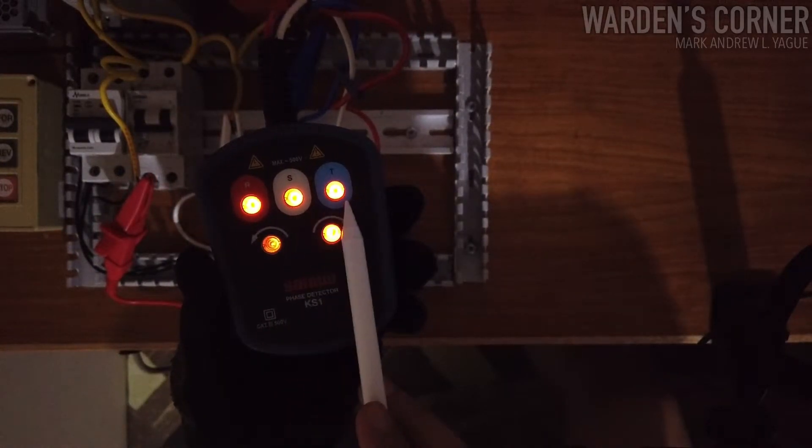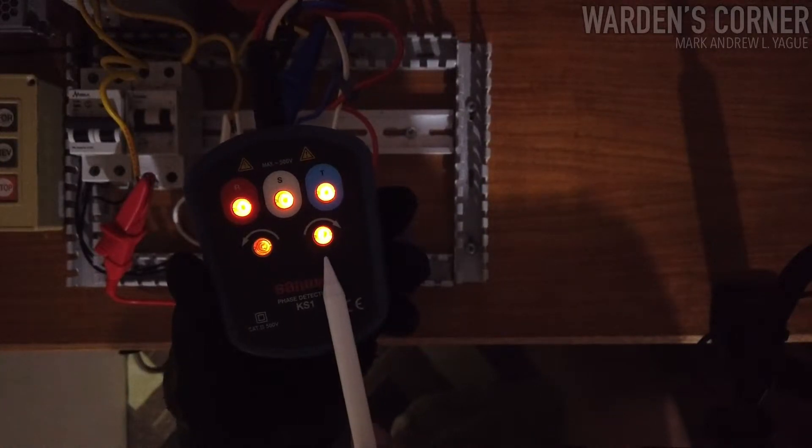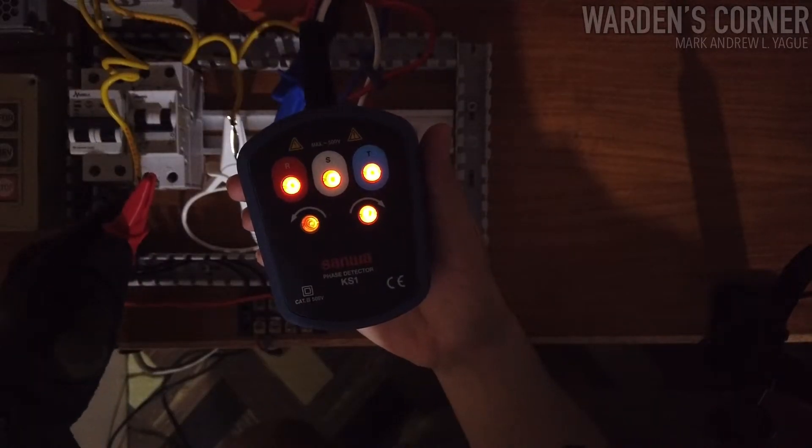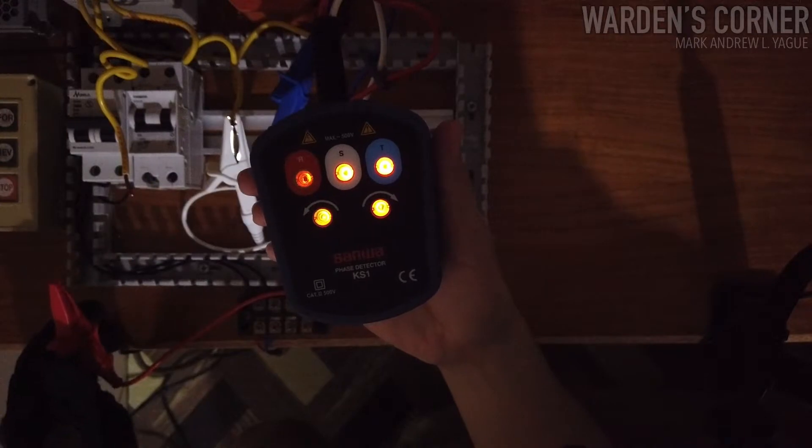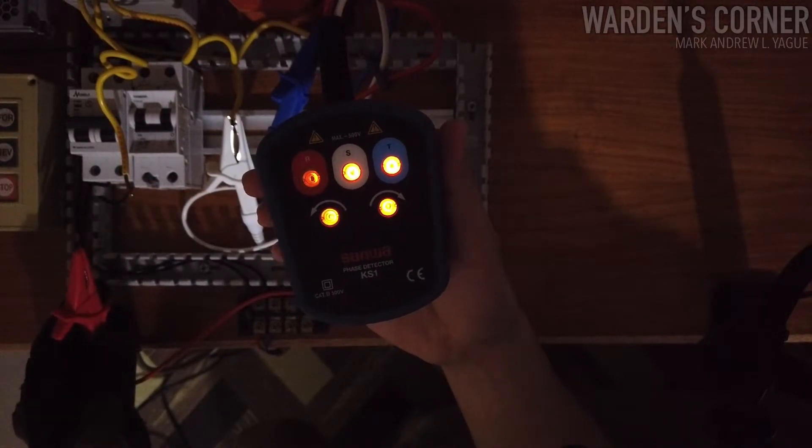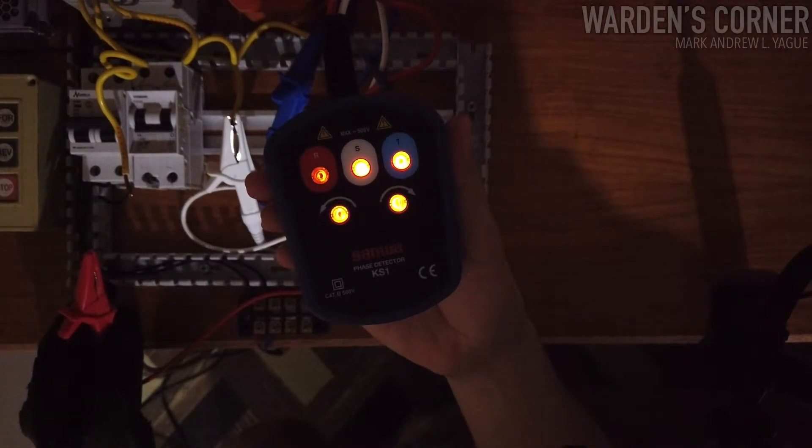When there is no open phase, indicators of RST are on. What if one of the phase is open? Its indicator R, S, or T is off, and both phase rotation indicators are on simultaneously.